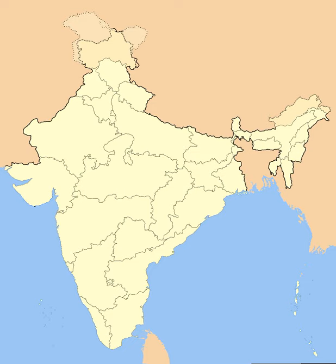The Union Territory of Pondicherry was created in 1954 comprising the previous French enclaves of Pondicherry, Karaikal, Yanam, and Mahé. Andhra state was created on 1 October 1953 from the Telugu-speaking northern districts of Madras state. The States Reorganization Act of 1956 reorganized the states based on linguistic lines, resulting in the creation of new states. As a result of this act, Madras state retained its name with Kanyakumari district added from Travancore-Cochin.